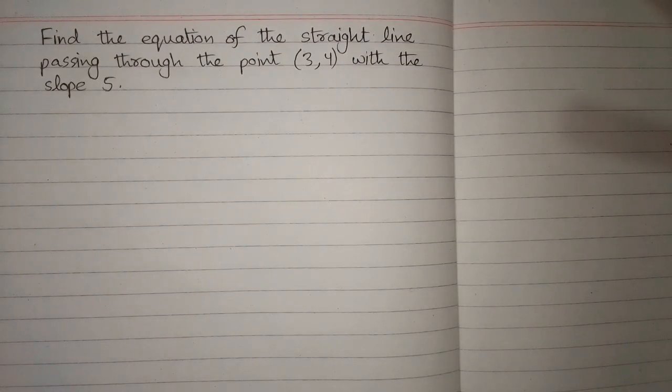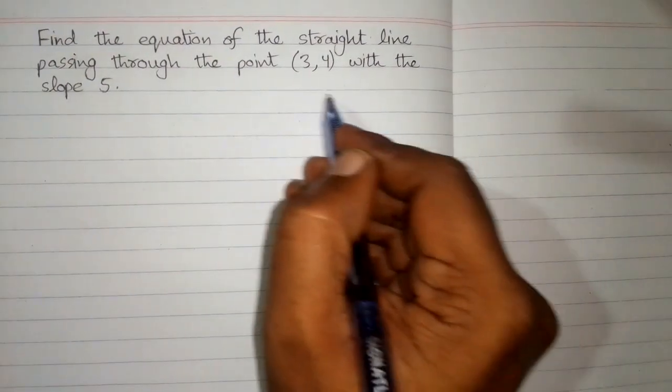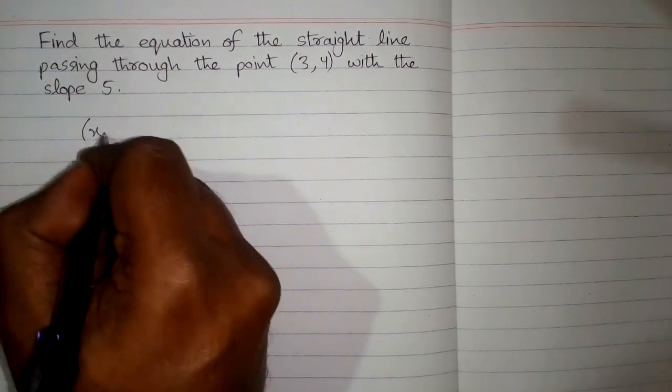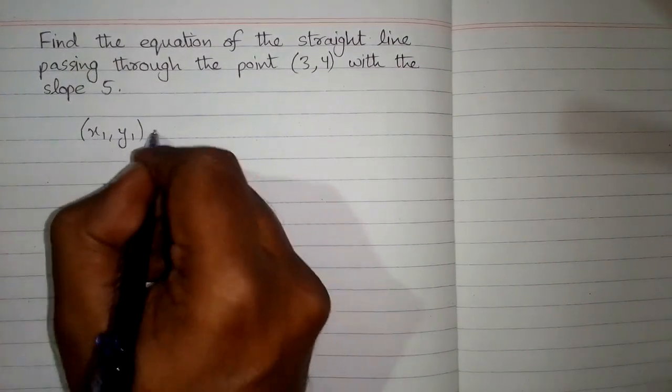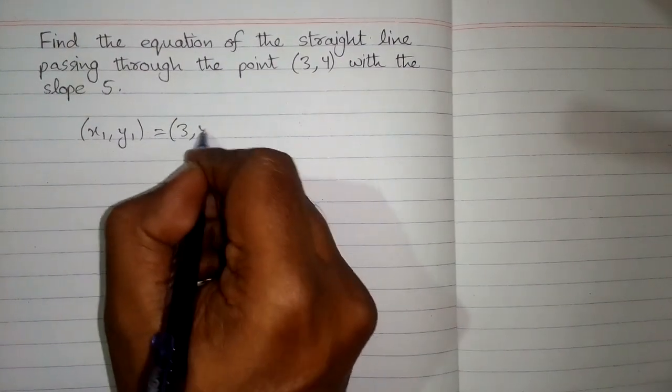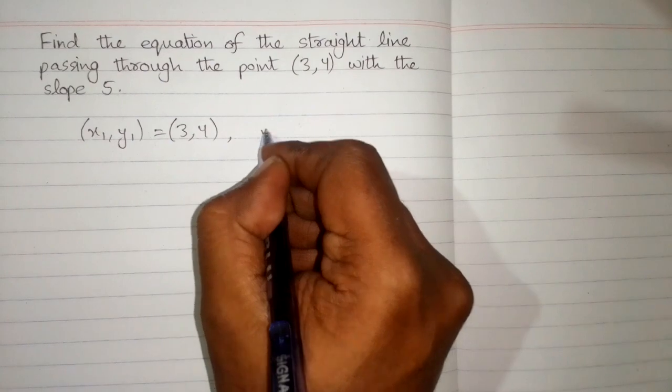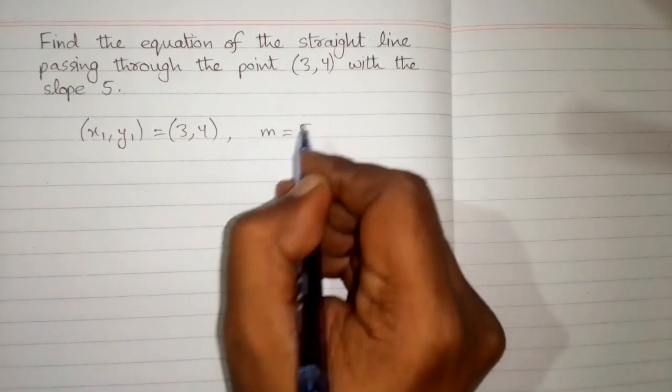In this video we will find the equation of the straight line passing through the point (3,4) with the slope 5. First of all we have a point so we will suppose that this point is x1 and y1 which is equal to (3,4) and the slope m is equal to 5.